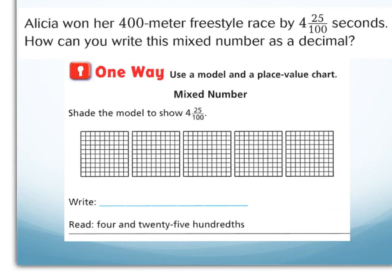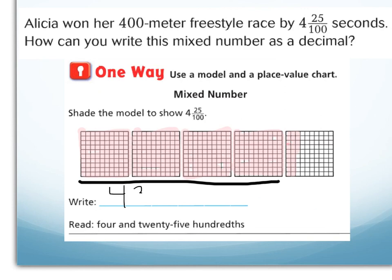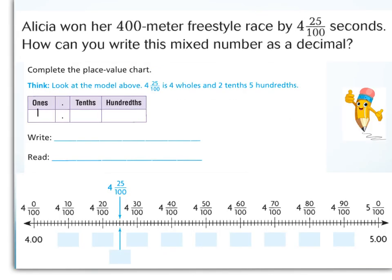Now they want us to show four and twenty-five hundredths. Alicia won her 400-meter freestyle race by four and twenty-five hundredths seconds. Instead of tenths, now I have to shade in hundredths. Now that I've shaded in my model to show four wholes and twenty-five hundredths, I can write my fraction four and twenty-five hundredths. To write that as a decimal, I have four wholes and twenty-five hundredths — in my decimal place value chart, that's the same as two tenths and five hundredths. I write four and twenty-five hundredths as four point two five, and I read it as four and twenty-five hundredths.